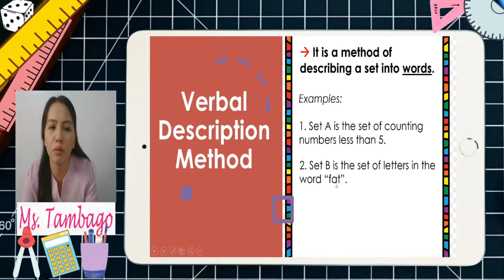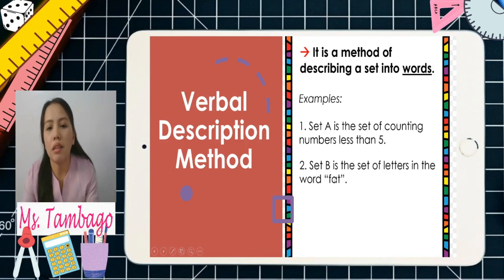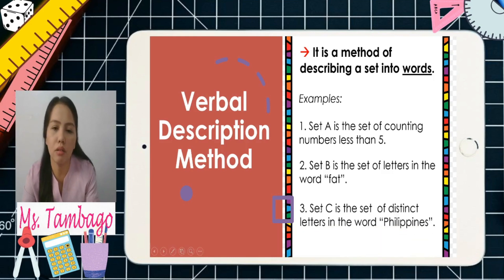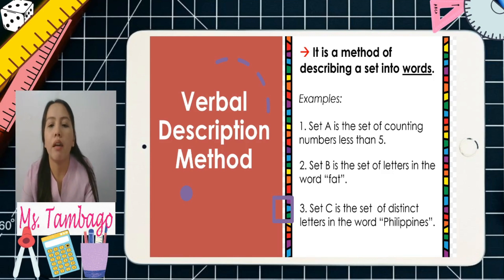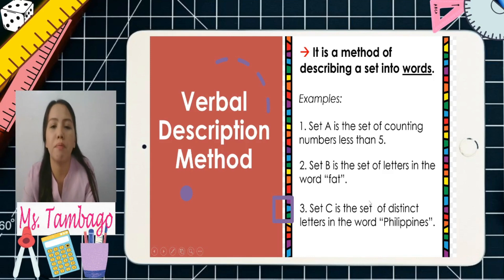Next, Set B is the set of letters in the word 'fat'. Earlier we listed f, a, t — now we write it as a word description. Number three, Set C is the set of letters in the word 'Philippines'. We write it as one word description. Those are examples of verbal description methods, written in sentence form using words.